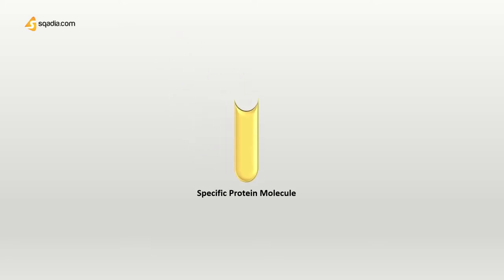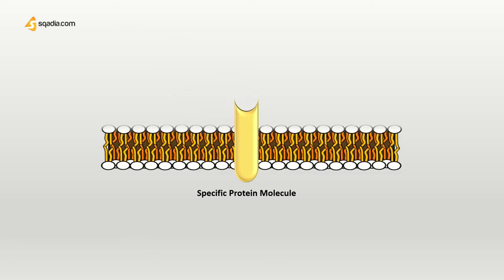We have a receptor — a specific protein molecule that is usually located in the cell membrane, although some intracellular and intranuclear receptors also exist. Here, we are looking only at the cell surface receptors. It has an extracellular part, a transmembrane part, and an intracellular part.